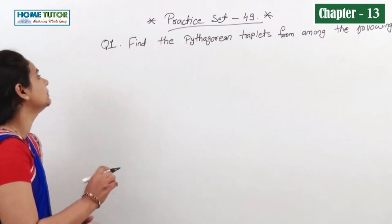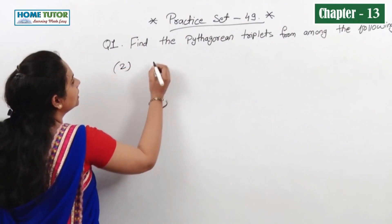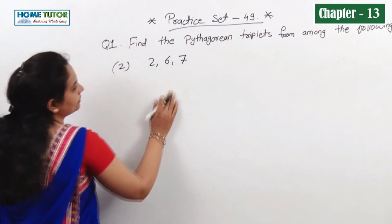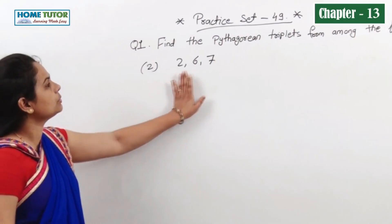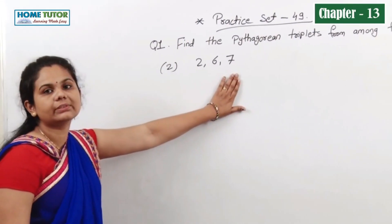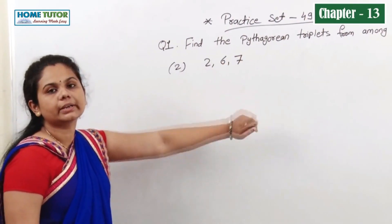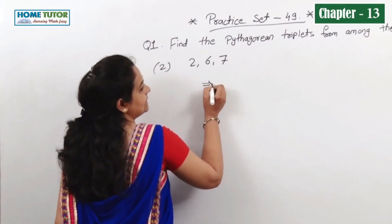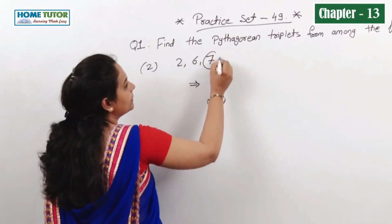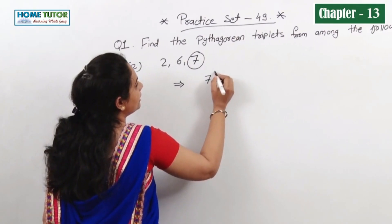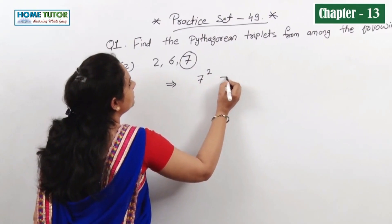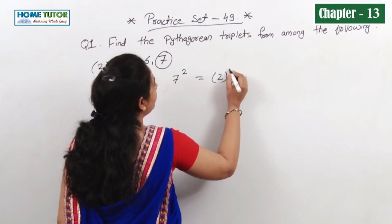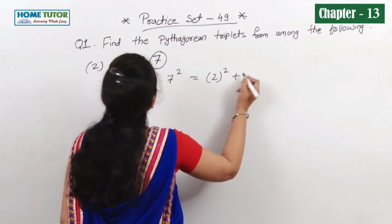The next example is numbers 2, 6, and 7. We will check whether 2, 6, 7 are a Pythagorean triplet. We take the biggest number first, and check if the square of the biggest number is equal to the sum of the squares of the remaining two numbers.